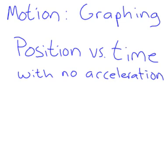Here we will graph position versus time in the situation with no acceleration. So an example would be you're cruising along on the freeway at 60 miles per hour. You are neither increasing nor decreasing your speed.